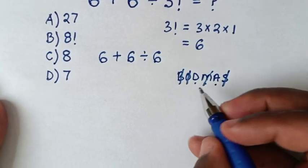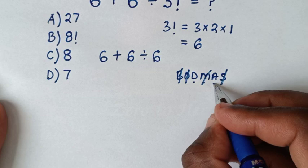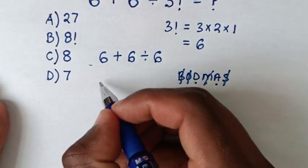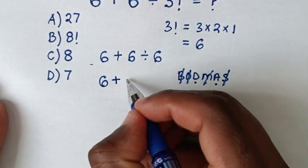Now by using this BODMAS rule we start to deal with division then addition. Now from this problem we have division of 6 divided by 6. So it will be 6 plus from 6 divided by 6 it is 1.